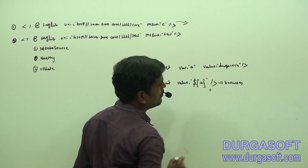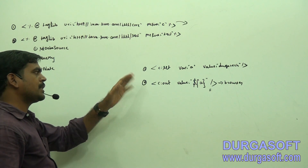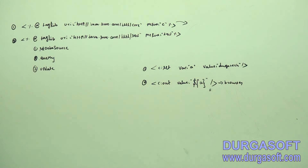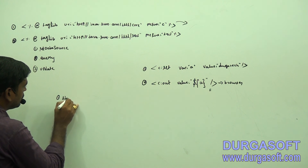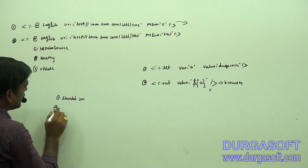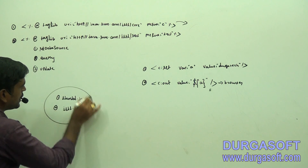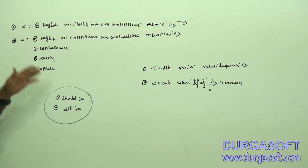If we want to work with JSTL, now we have to remember two JAR files. Number one is standard.jar, number two is jstl.jar. We have to remember these two JAR files. We can place these two JAR files in the lib folder and we can start the work. These URIs are going to be looked up in these JAR files only.